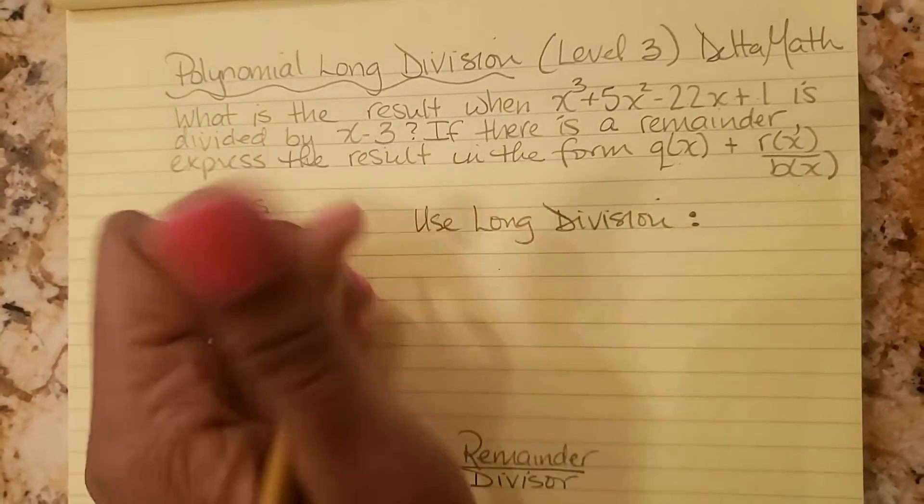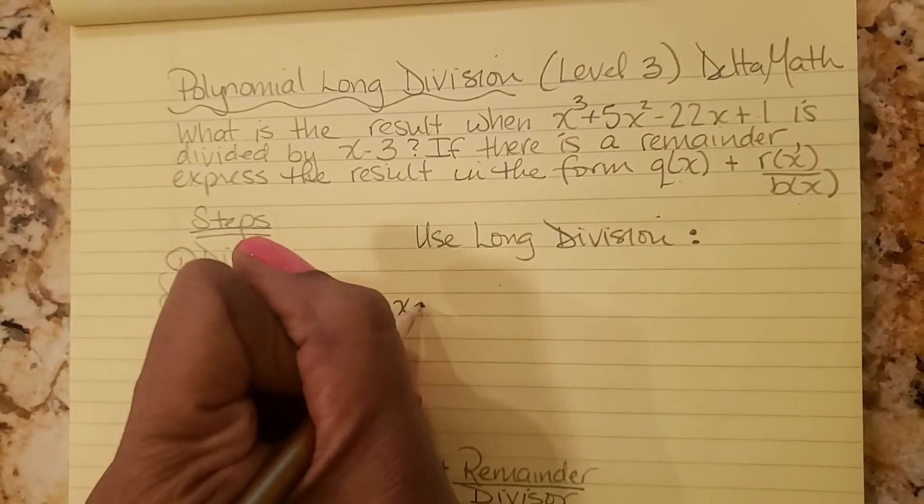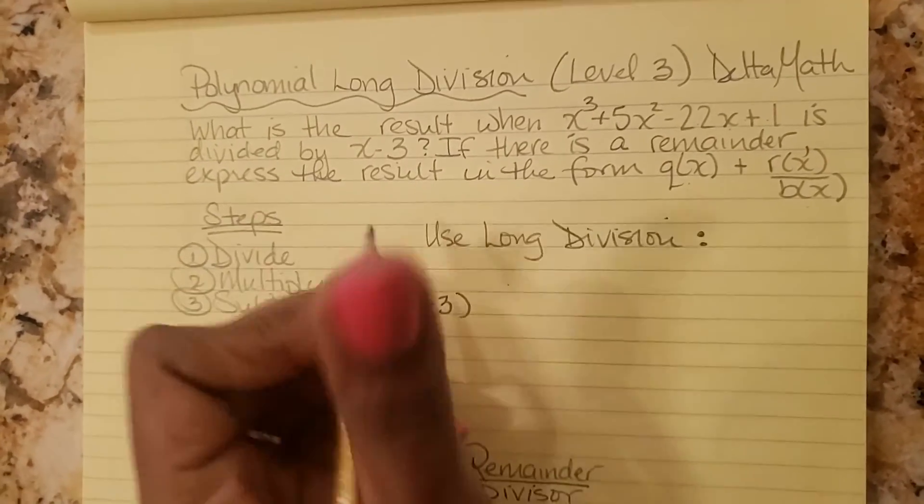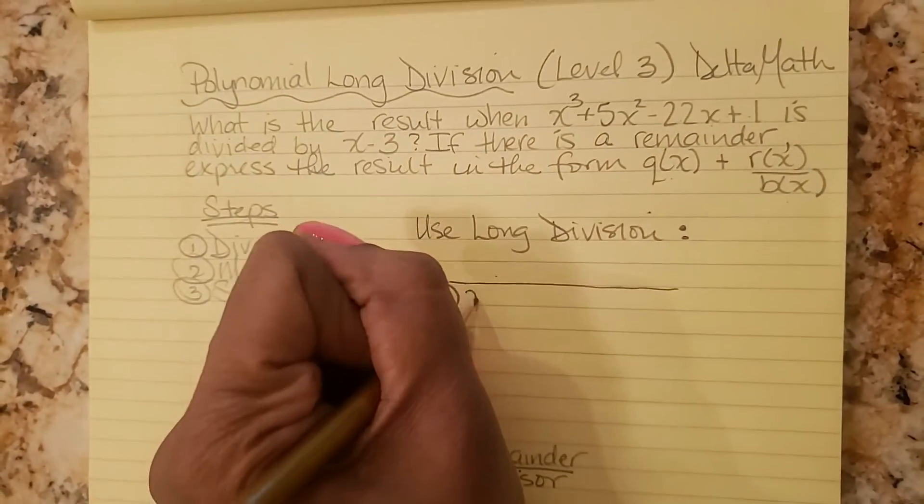So we're going to use long division. We're going to put x minus 3 on the outside and this polynomial on the inside.